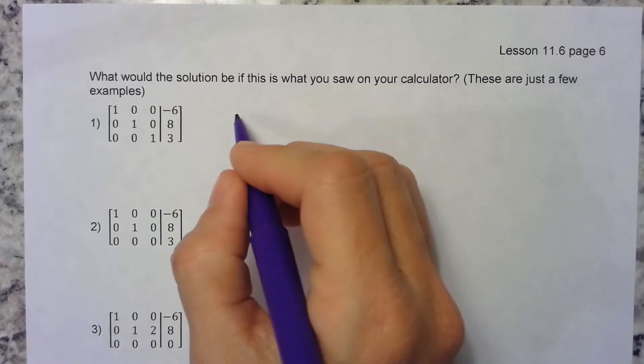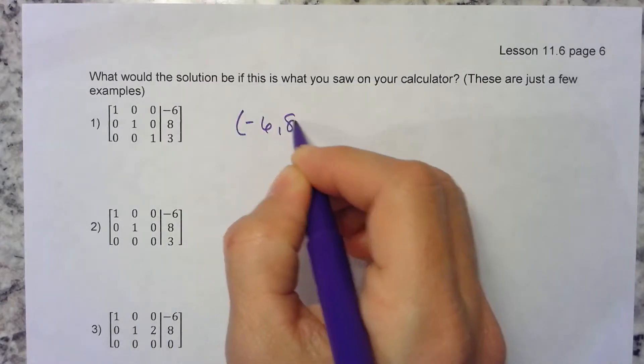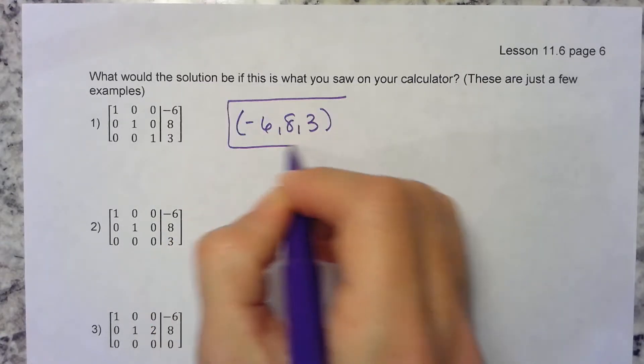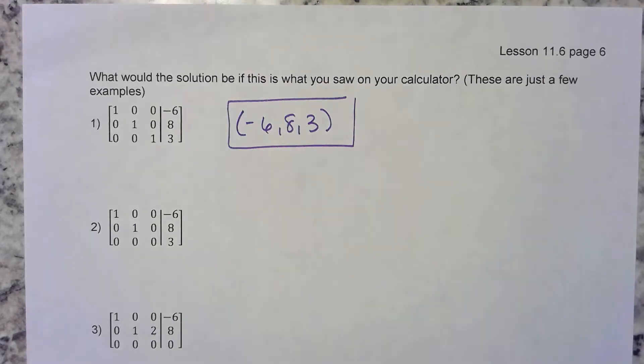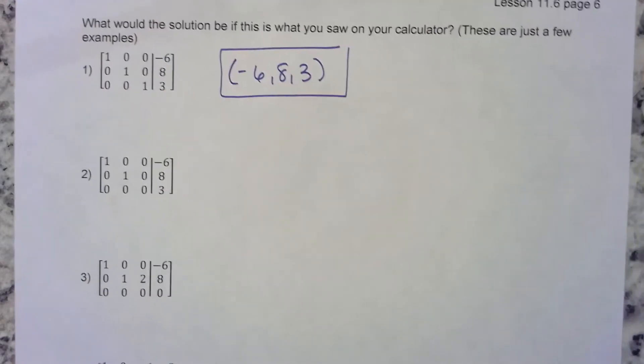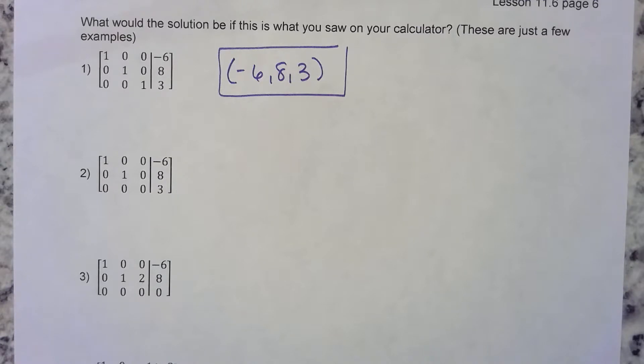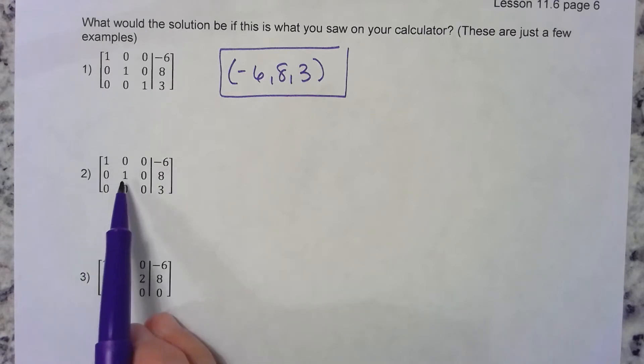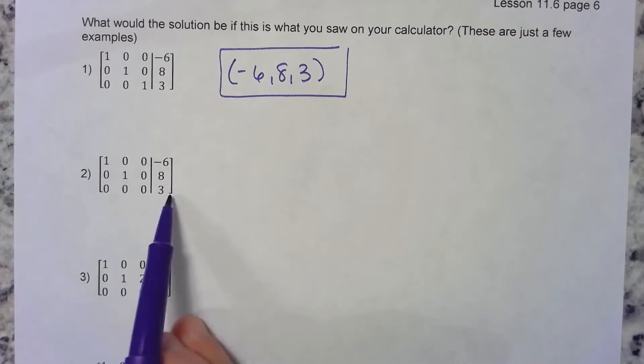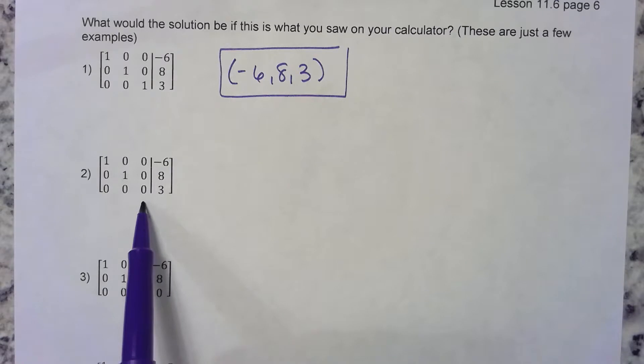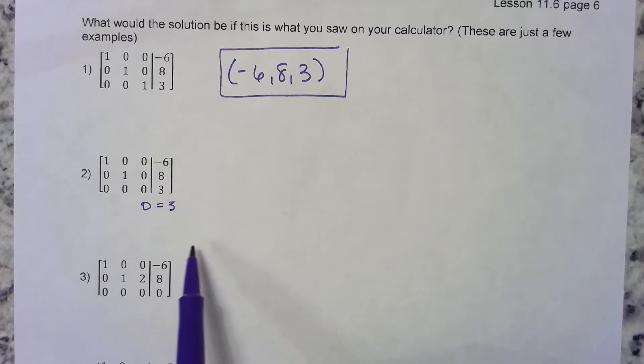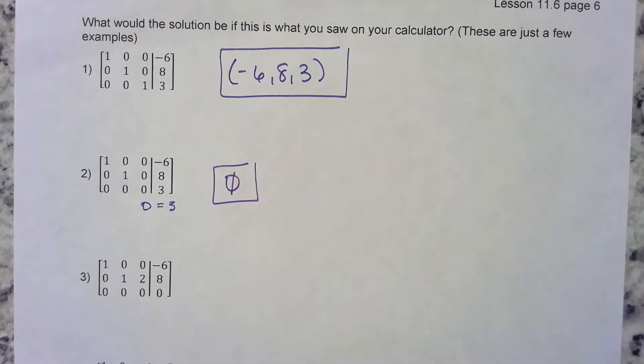What does the next one mean? That means x is negative 6, y is 8, but what about this bottom row? That means 0 equals 3. Is that a true statement? No, and in that case there is no solution.